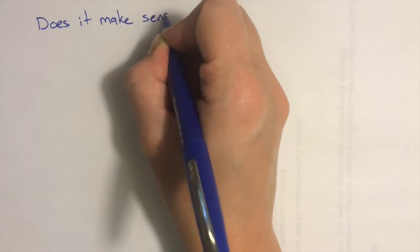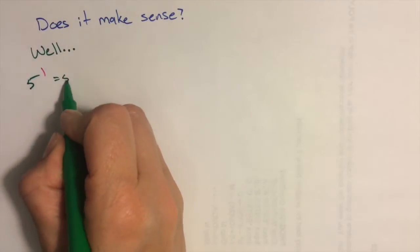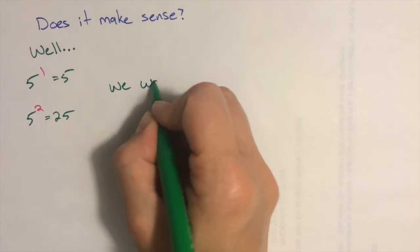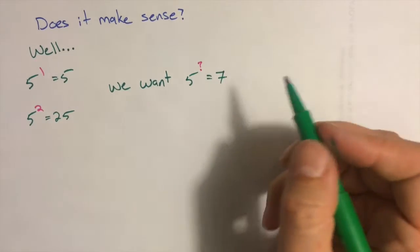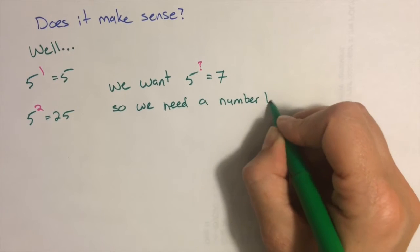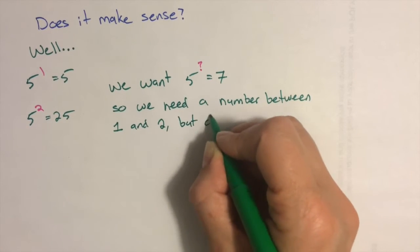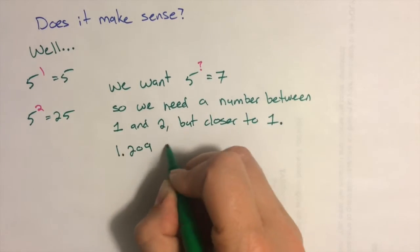Now does that mean anything? Does it make any sense? Well, we know that 5 to the first power is 5, but 5 to the second power jumps all the way up to 25. We were looking for 5 to the what equals 7, so we need a number that's between 1 and 2, but probably a bit closer to 1. So our number 1.209 seems to fit the bill.